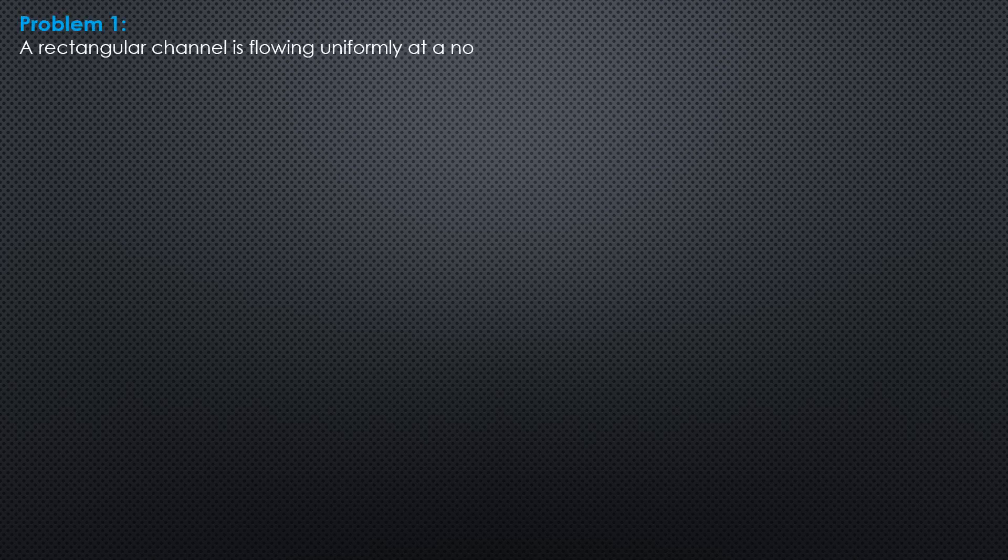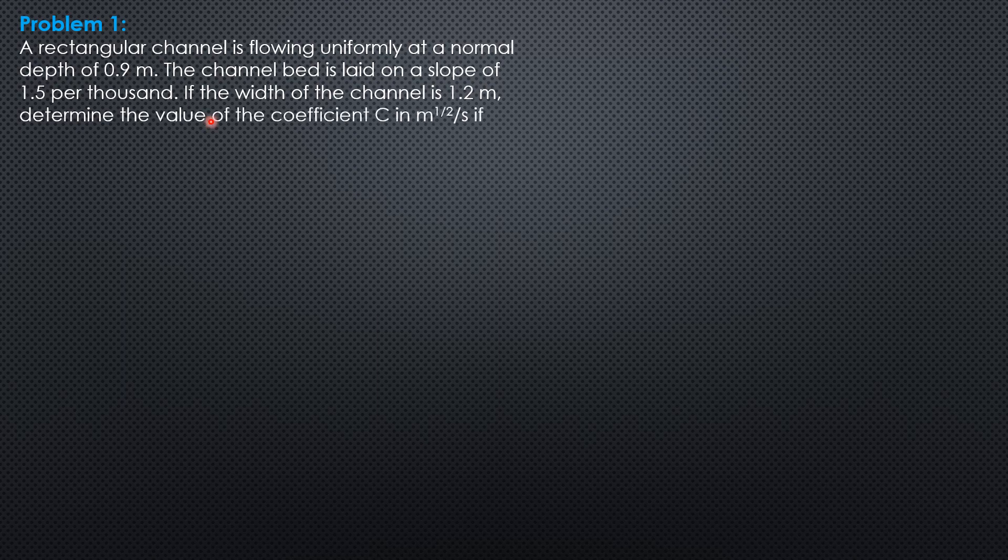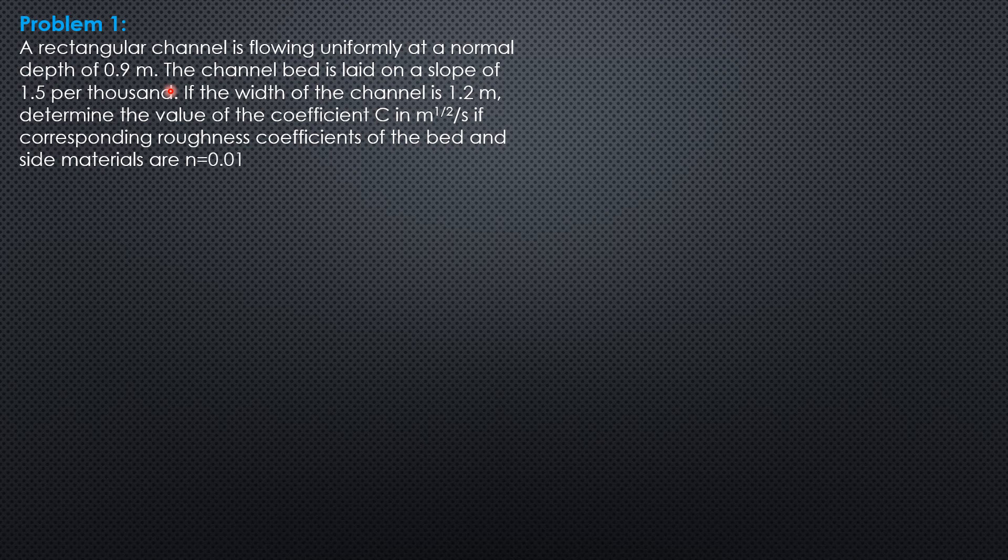A rectangular channel is flowing uniformly at a normal depth of 0.9 meter. The channel bed is laid on a slope of 1.5 per thousand. When you say normal depth, it is understood the flow is uniform. So take note of that.